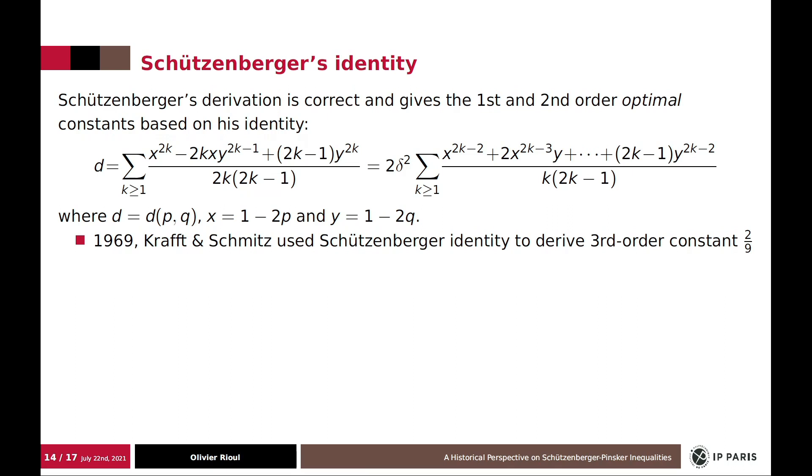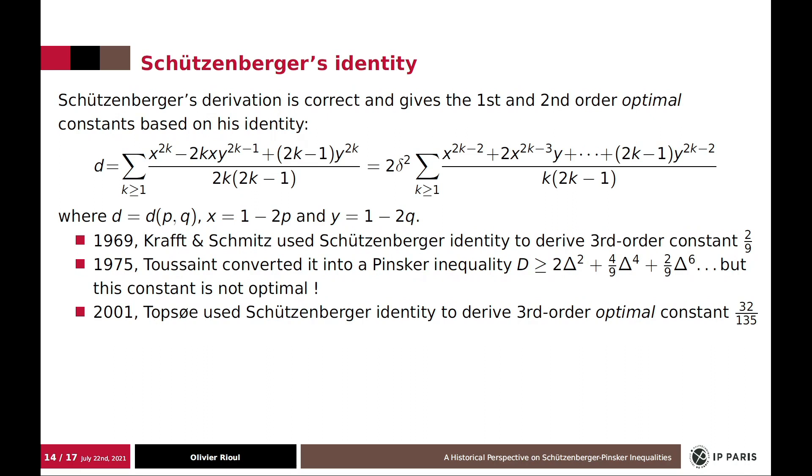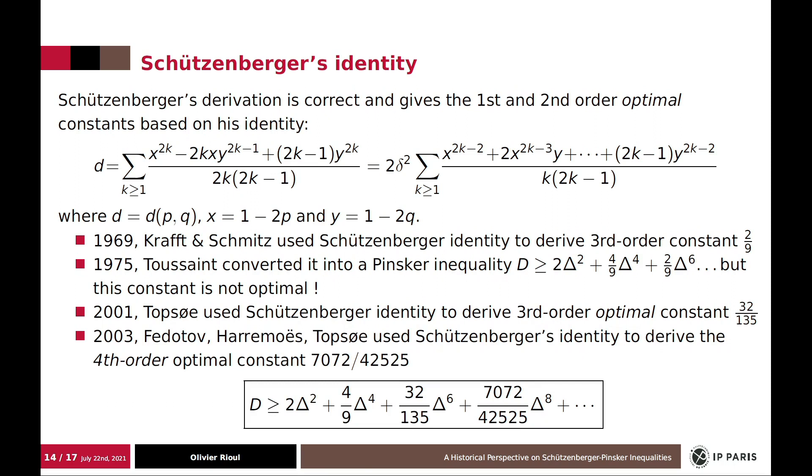Kraft and Schütte used Schützenberger identity to derive the third order constant, which was two over nine, which was converted to a Pinsker inequality by Toussaint. And much recently, Topsøe found that the best optimal constant in order three was 32 over 135. And all this used Schützenberger identity, the 1953 thesis of Schützenberger.